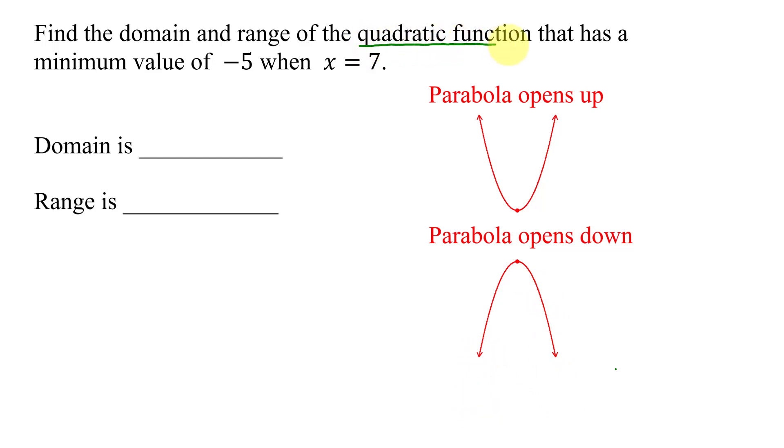So our quadratic function, we were told, has a minimum value of negative 5. So it cannot be a parabola that opens down. So I know my graph is going to look like this.